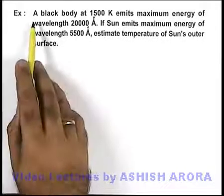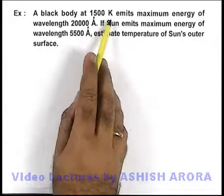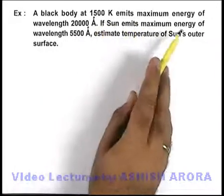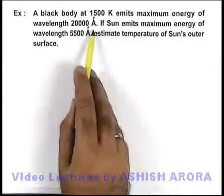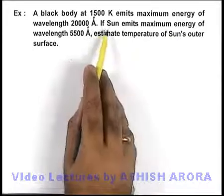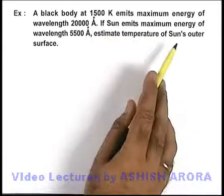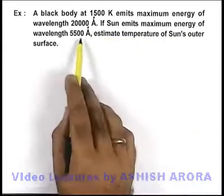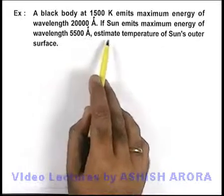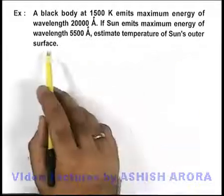In this example, we are given that a black body at 1500 Kelvin emits maximum energy at wavelength 20000 angstrom. It is also given that if the Sun emits maximum energy at wavelength 5500 angstrom, we are required to estimate the temperature of Sun's outer surface.